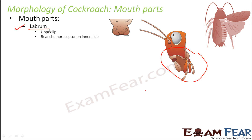The first mouth part is the labrum, which is nothing but the upper lip. It bears chemoreceptors on its inner side, which detect the presence of chemicals. In the side view of the head, the labrum is the upper lip and the orange-colored structure is the lower lip.